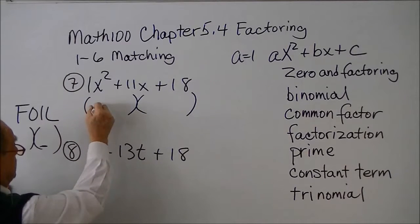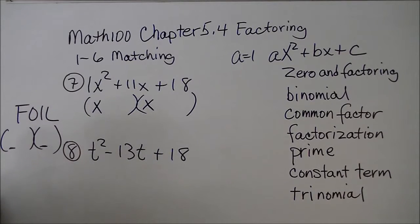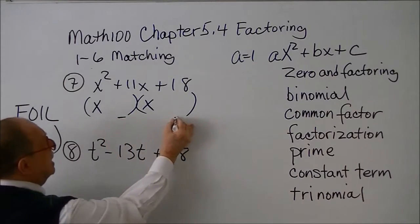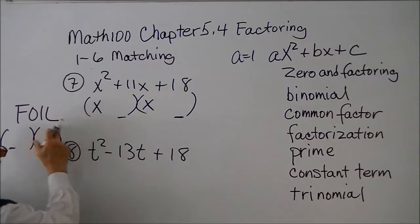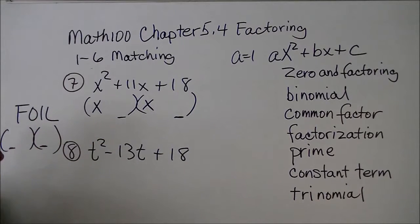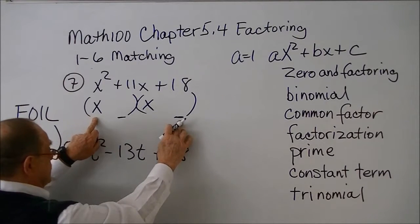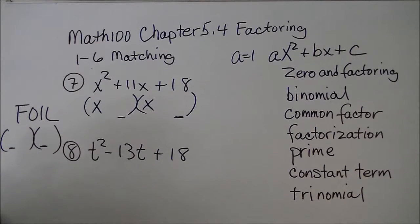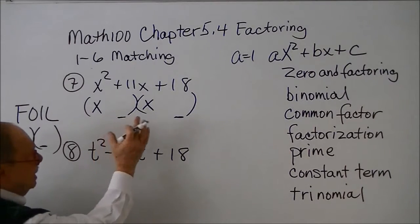It's just going to be x and an x in the first positions, because if we multiply our first terms we get x squared. Now we're going to reverse this a little bit — how did we get that last term, the L in FOIL? We multiplied the last terms together to get 18. We also have to remember that we multiplied the outers and the inners and added them up to get 11.